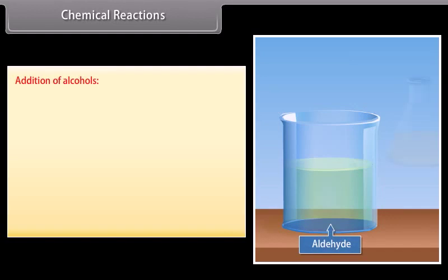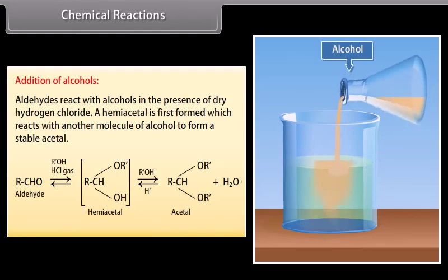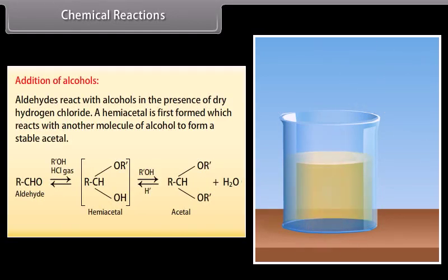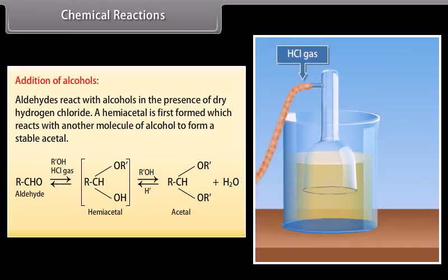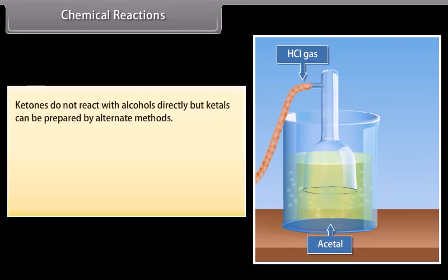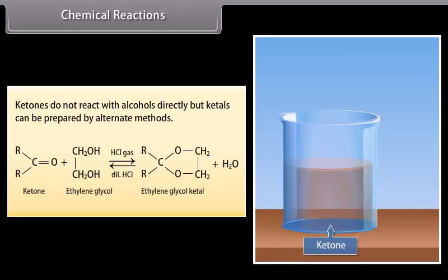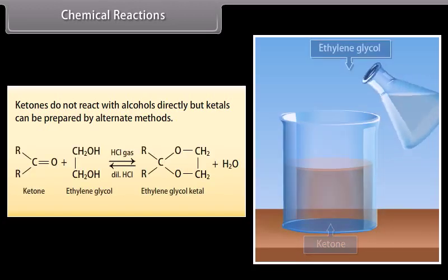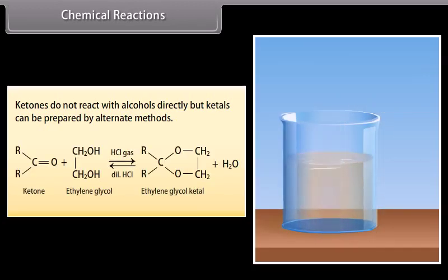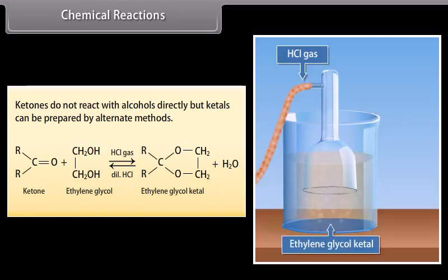Addition of alcohols: aldehydes react with alcohols in the presence of dry hydrogen chloride. A hemiacetal is first formed, which reacts with another molecule of alcohol to form a stable acetal. Ketones do not react with alcohols directly, but ketals can be prepared by alternate methods. A ketone reacts with ethylene glycol in the presence of hydrochloric gas to form ethylene glycol ketal along with water.